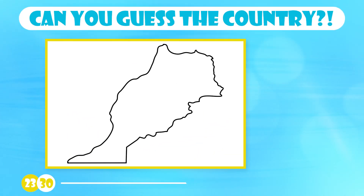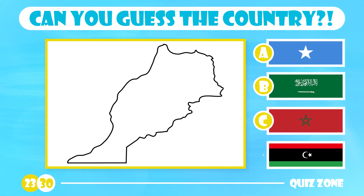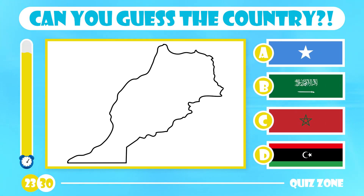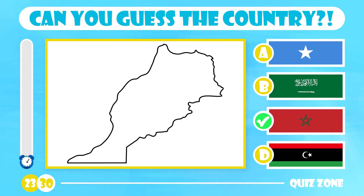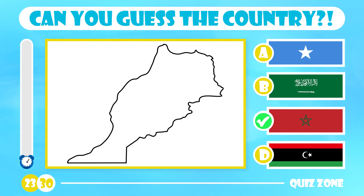Can you name this country? Somalia, Saudi Arabia, Morocco or Libya? The answer is Morocco. A rugged, mountainous interior characterizes Morocco with large areas of desert and a lengthy coastline along the Atlantic Ocean and the Mediterranean Sea.